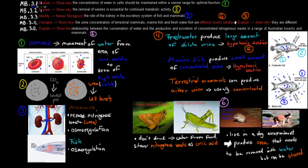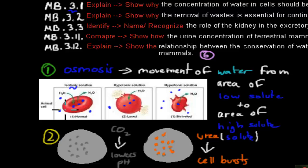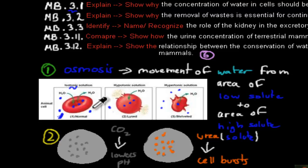The first one is 3.1, which says 'explain' — meaning show why the concentration of water in the cells should be maintained within a narrow range for optimal function. If we have an isotonic solution, which is that narrow range, we have exactly as much solute inside as outside, which means water will flow in and out at the same rate. Overall the cell will have a perfect amount of water and work properly. Compare that to, for example, a hypotonic solution.